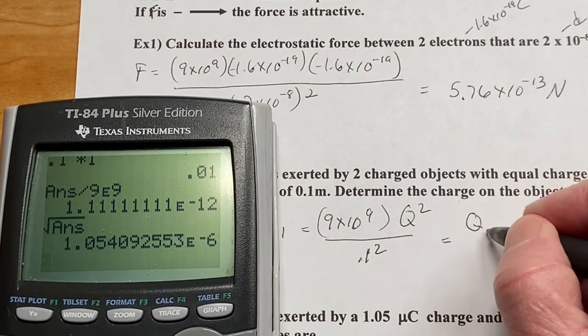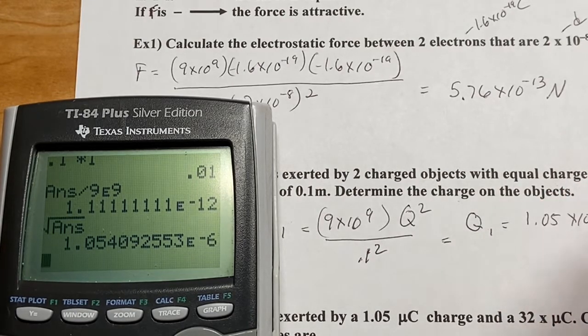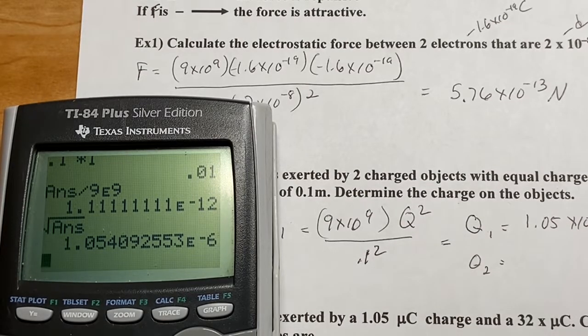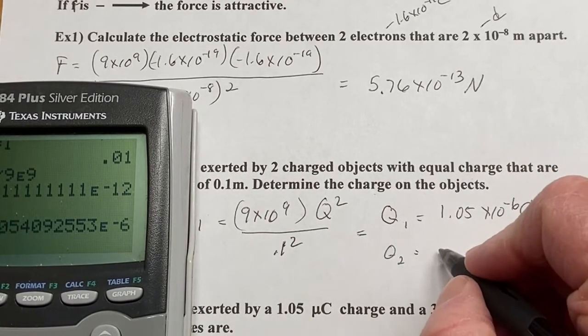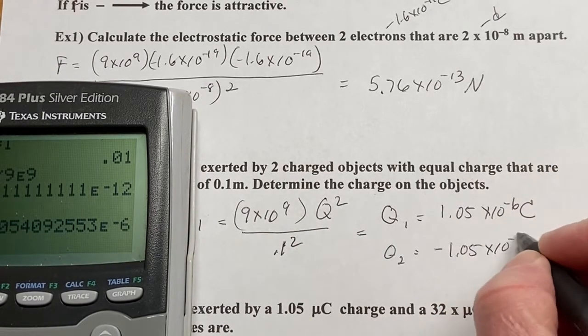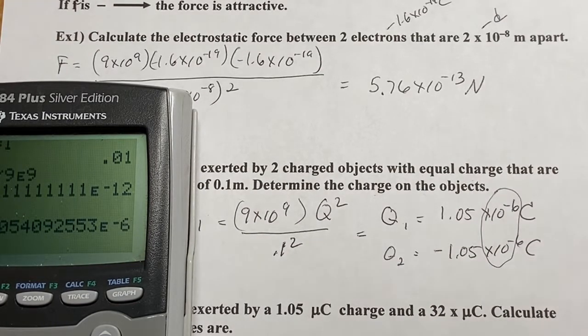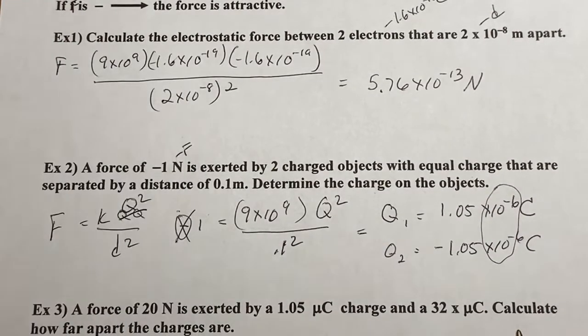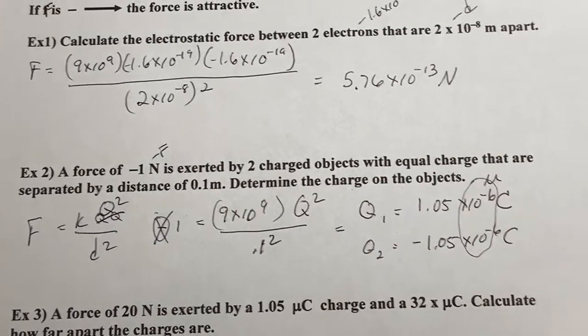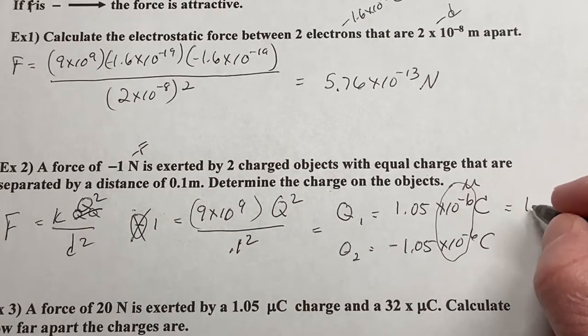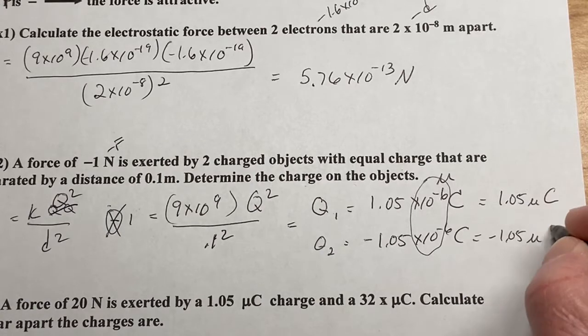So you don't have to retype it in. So Q1 is 1.05 times 10 to the negative 6. Q2, just so I label them differently. Coulombs would be negative 1.05 times 10 to the negative 6 Coulombs. Alright, well 10 to the negative 6 is kind of an important value. That goes into our metric prefixes. That is micro. So these are, we will write them sometimes as 1.05 micro Coulombs and negative 1.05 micro Coulombs.